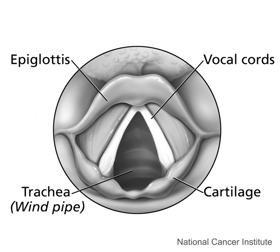Phonetics as a research discipline has three main branches. Articulatory phonetics is concerned with the articulation of speech, the position, shape, and movement of articulators or speech organs, such as the lips, tongue, and vocal folds. Acoustic phonetics is concerned with acoustics of speech, the spectrotemporal properties of the sound waves produced by speech, such as their frequency, amplitude, and harmonic structure. Auditory phonetics is concerned with speech perception, the perception, categorization, and recognition of speech sounds and the role of the auditory system and the brain in the same. Phonetic insight is used in a number of applied linguistic fields such as forensic phonetics (the use of phonetics for forensic purposes), speech recognition (the analysis and transcription of recorded speech by a computer system), speech synthesis (the production of human speech by a computer system), and pronunciation (to learn actual pronunciation of words of various languages).